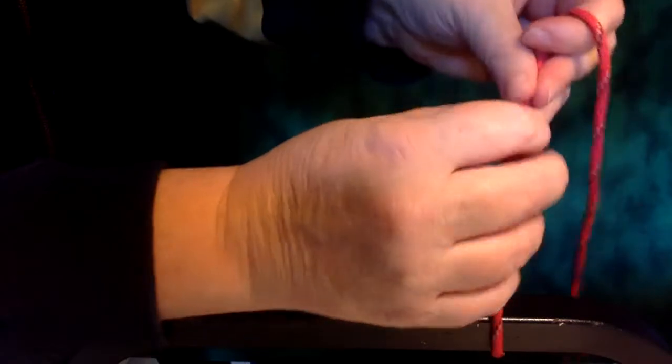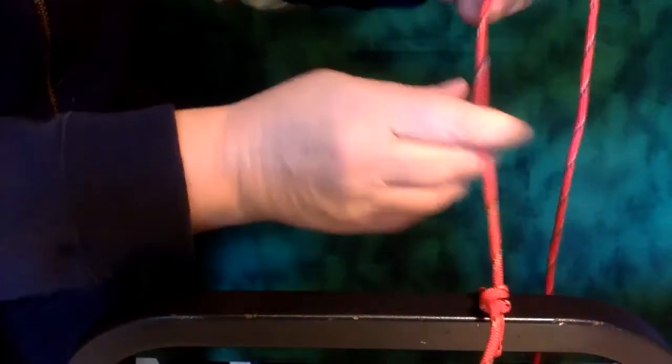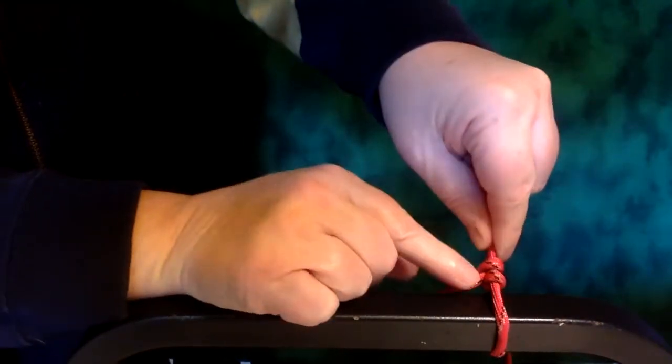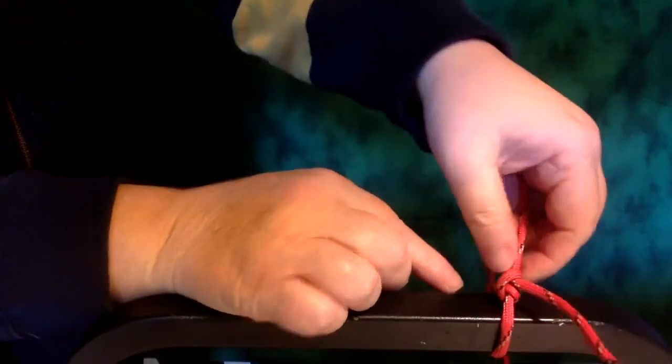Go the other direction. There's your granny knot. If you let that spill, tighten it down. There is your double half hitch, which again is a clove hitch tied around its own bike.